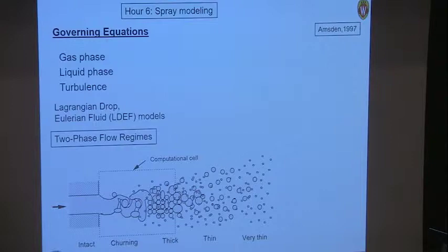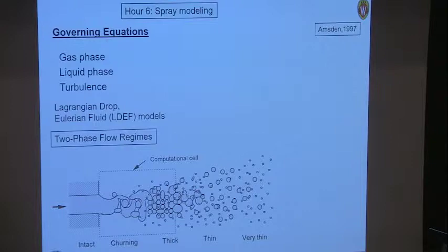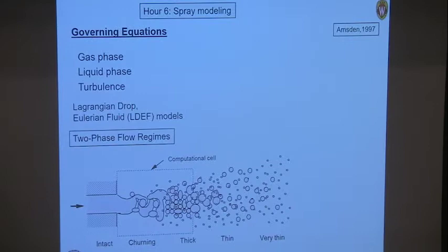For a typical diesel injector, the nozzle diameter is around 100 microns, while the computational cell in a realistic computation is around a millimeter — we're off by a factor of 10. So a lot of the process is occurring inside the grid; you're not resolving it. It's a sub-grid scale process.